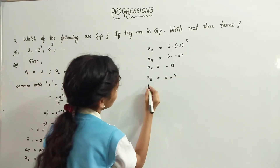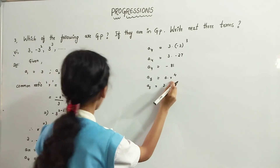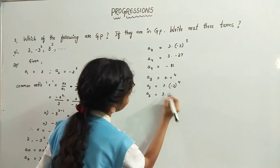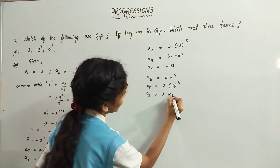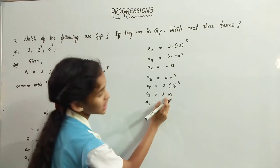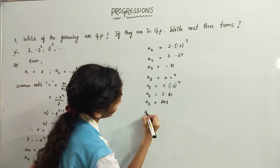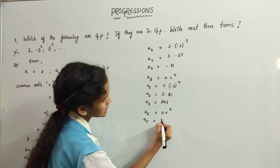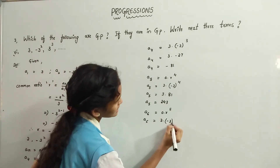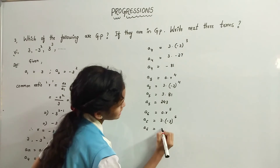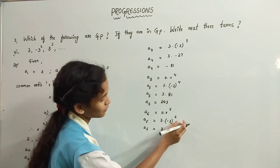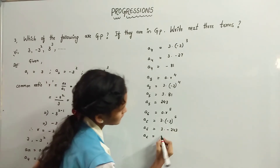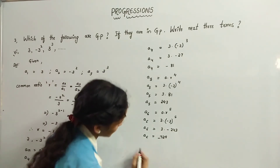Next, A5 equals A into R to the power 4. A5 equals 3 into minus 3 to the power 4, which is 81. So A5 equals 3 into 81, equals 243. Now for A6 equals A into R to the power 5. Minus 3 to the power 5 is minus 243. A6 equals 3 into minus 243, which equals minus 729.